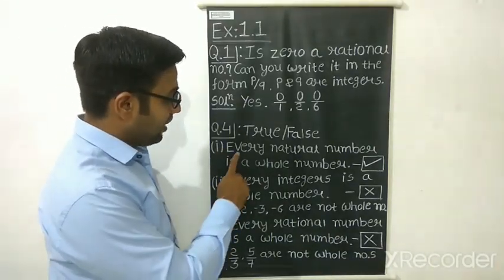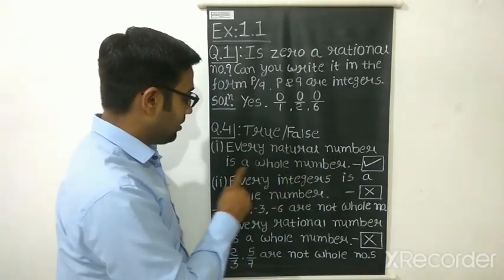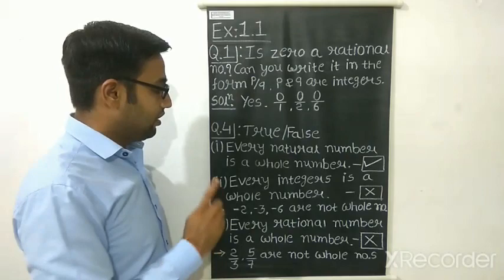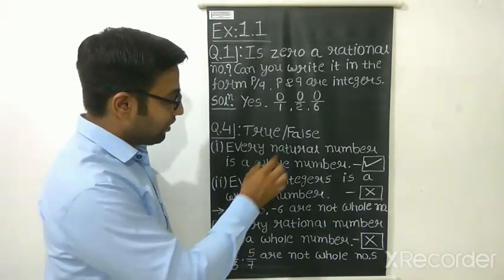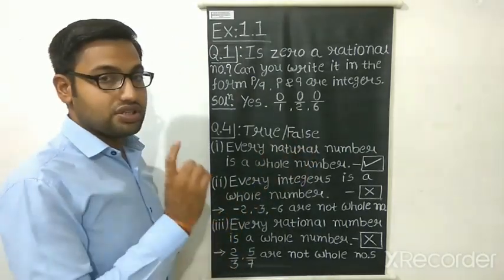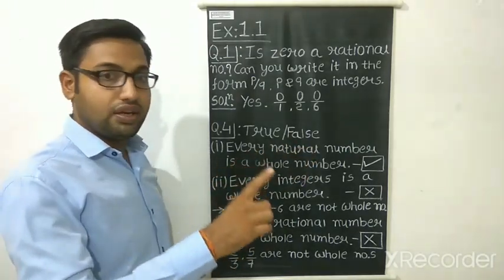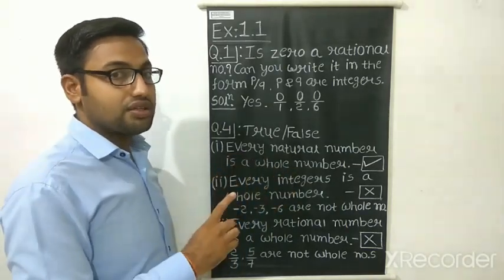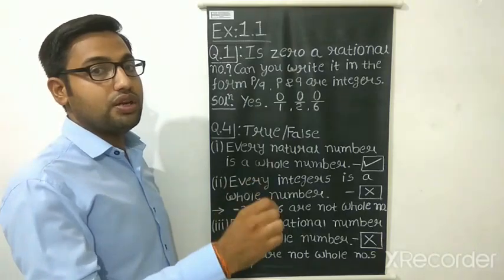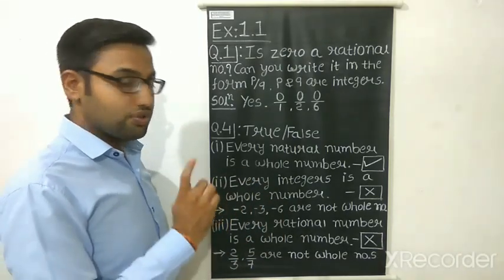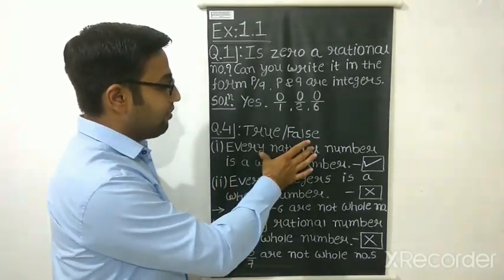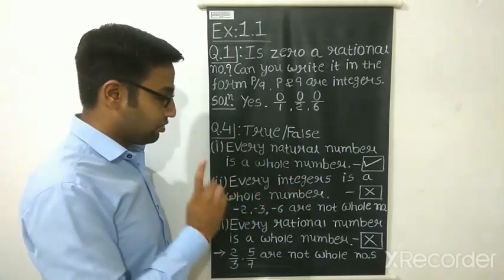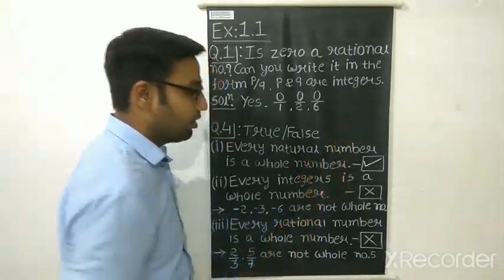First statement: every natural number is a whole number. Natural numbers start from 1, 2, 3, 4 and whole numbers start from 0, 1, 2, 3, 4. Every natural number is present in the set of whole numbers, so this statement is true.